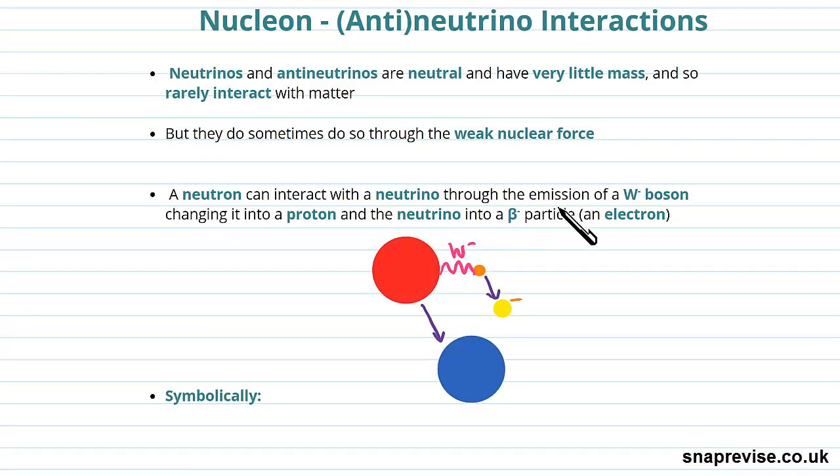What we're going to have here is that we're going to have a nucleon interacting with a neutrino or an anti-neutrino, and through that they're going to have a W-plus or W-minus interaction. There's a W-boson interaction between two particles, and that changes the two particles.